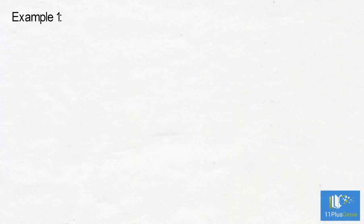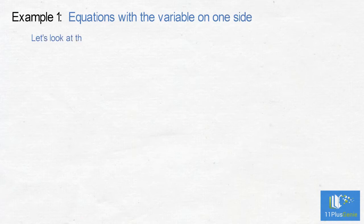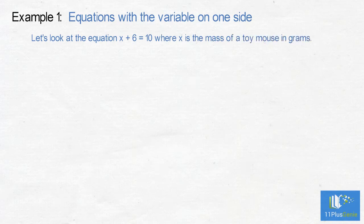Example 1: Equations with a variable on one side. Let's look at the equation x plus 6 equals 10 where x is the mass of a toy mouse in grams. We can represent this equation as follows.